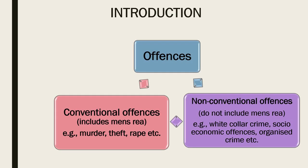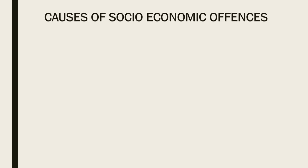Offenses are broadly described into two types: conventional offenses and non-conventional offenses. Conventional offenses include mensuria — which involves having knowledge, motive, and intention to commit a crime, such as murder, theft, or rape. Non-conventional offenses do not include mensuria; for example, white collar crime, socioeconomic offenses, and organized crime.